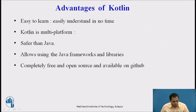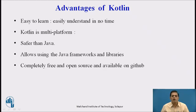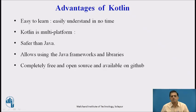The advantages of Kotlin are: it is easy to learn, as its basics are most similar to Java — if anyone has worked in Java, they can easily understand Kotlin in no time. Kotlin is multi-platform and supported by all Java IDEs, so you can write and execute programs on any machine supporting JVM. It is safer than Java and allows using Java frameworks and libraries in new Kotlin projects. The Kotlin programming language, including the compiler, libraries and all tooling, is completely free, open source, and available on GitHub at github.com/JetBrains/Kotlin.